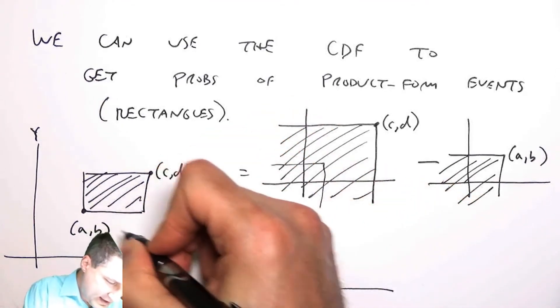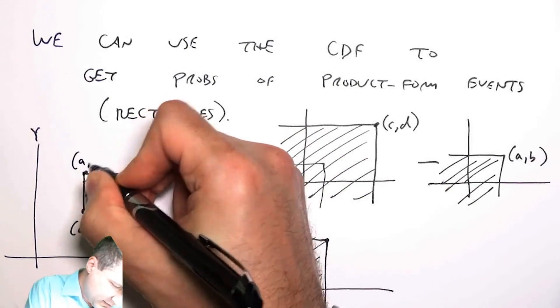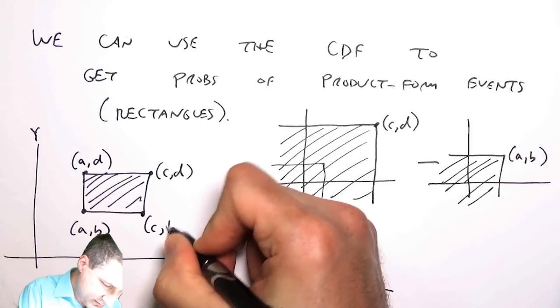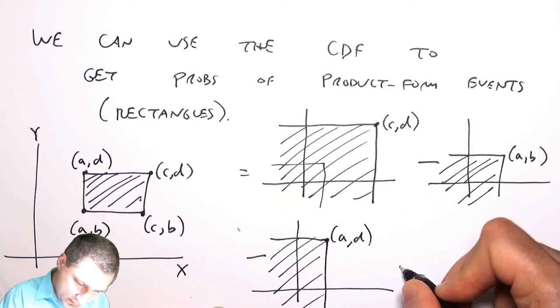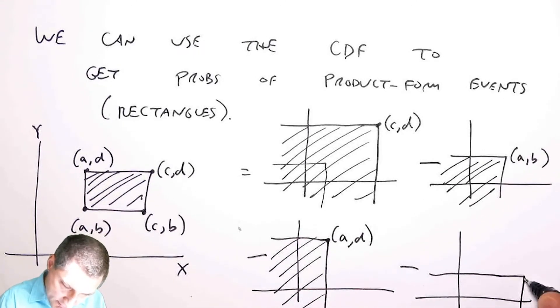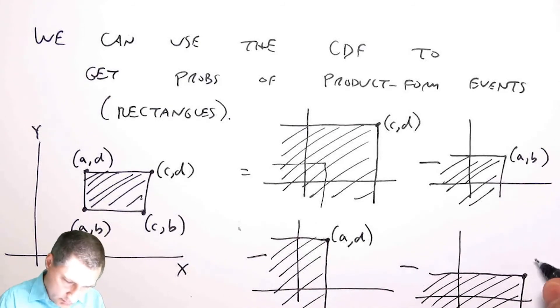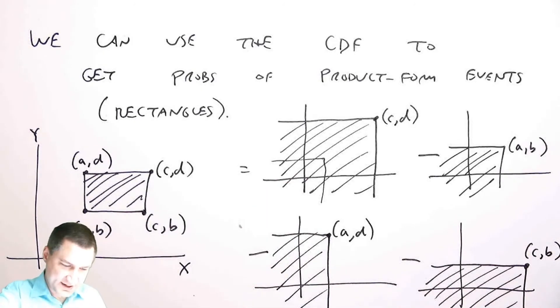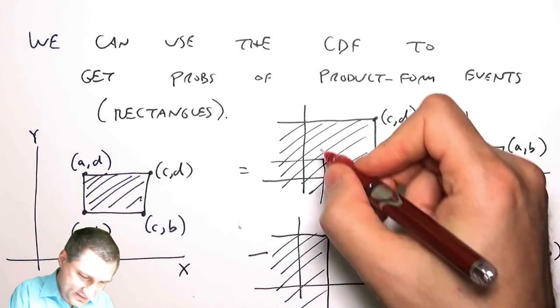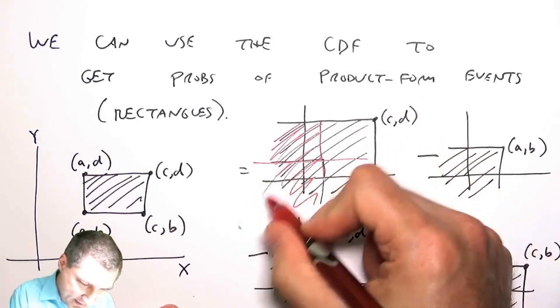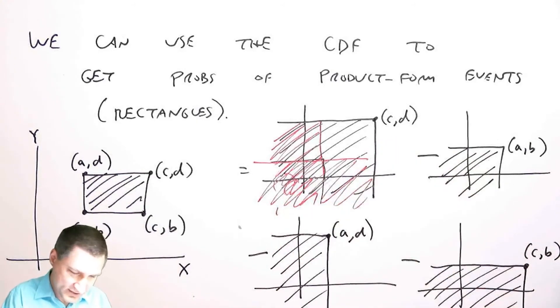Let's suppose this is going to be a comma d, this is going to be c comma b. If I take this and subtract this part off, now this part is gone. Now I subtract this part off, now this part is gone, but I subtracted this part here twice, so I actually have to add this back in, not subtract it. I was too quick to say that.